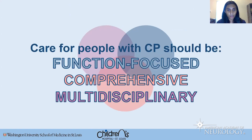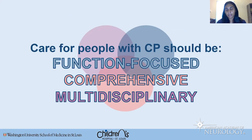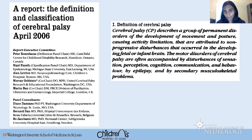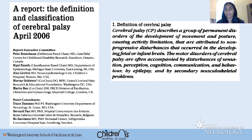Care must also be comprehensive and multidisciplinary. The full consensus definition notes that CP is often accompanied by disturbances of sensation, perception, cognition, communication, behavior, epilepsy, and secondary musculoskeletal problems. Motor function is not an island — improving other aspects of function helps achieve motor goals. For example, if someone's goal is to use a handheld iPad for communication, the motor treatment plan should focus on improving arm and hand coordination to operate that device. If using an eye gaze device, improving eye function optimizes communication ability.